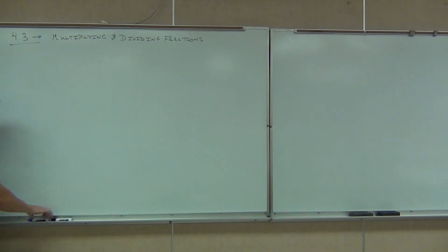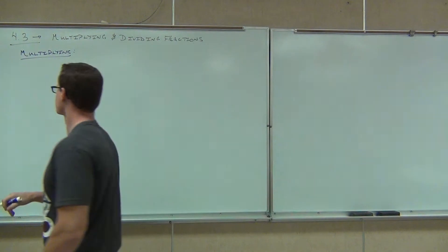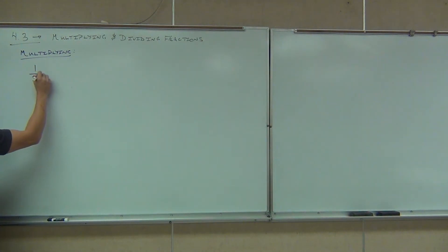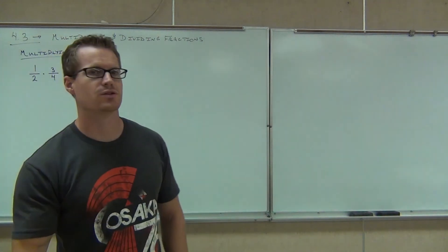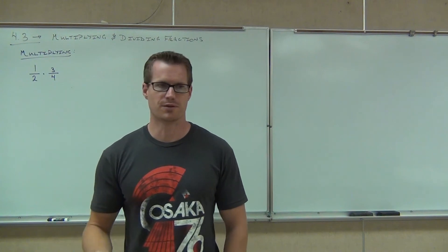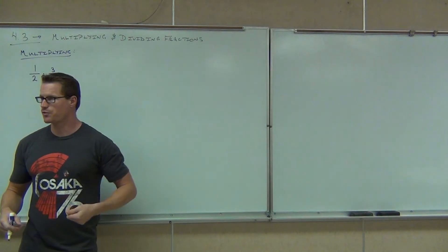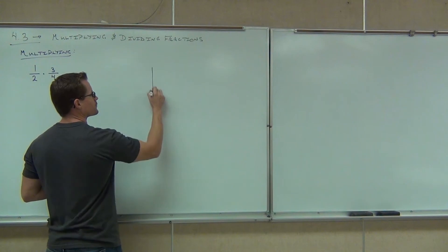We're going to talk about how to multiply and divide some fractions. Let's talk first on how to multiply some fractions. When we're multiplying fractions, we're going to start with a nice example to illustrate why multiplying fractions is the way it is. For instance, 1/2 times 3/4. Some of you might know the answer to this problem if you've ever had multiplication of fractions before. But I want you to know why we do what we do with multiplying fractions.